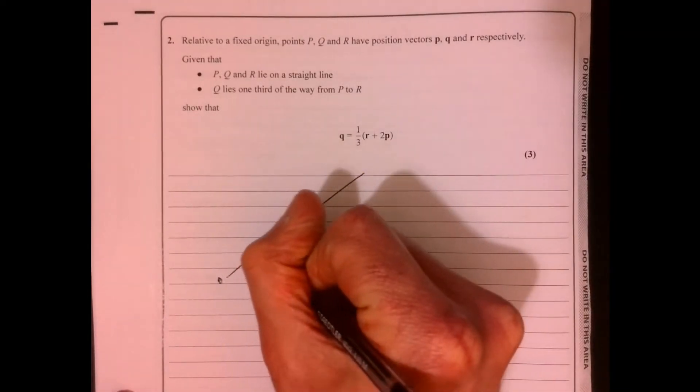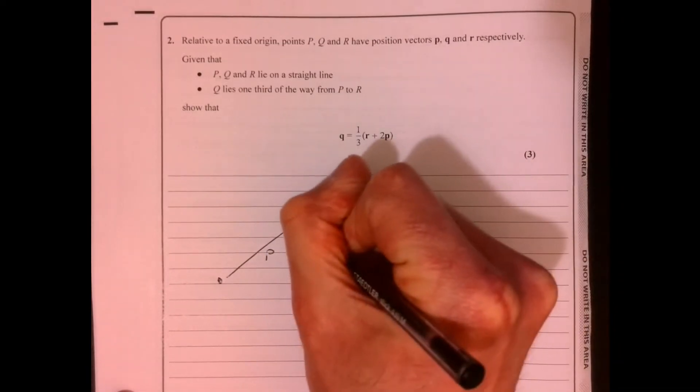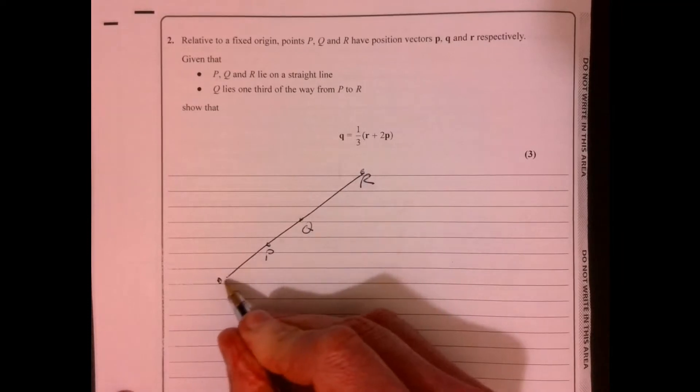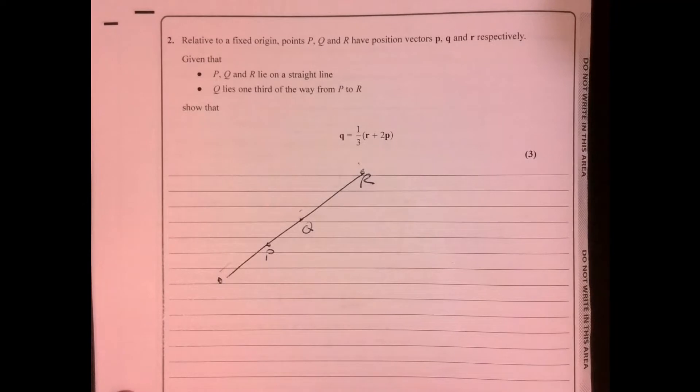And we've got P, Q, and we've got R. And we know that this is vector P, and this is vector Q, and this is vector R. Right.